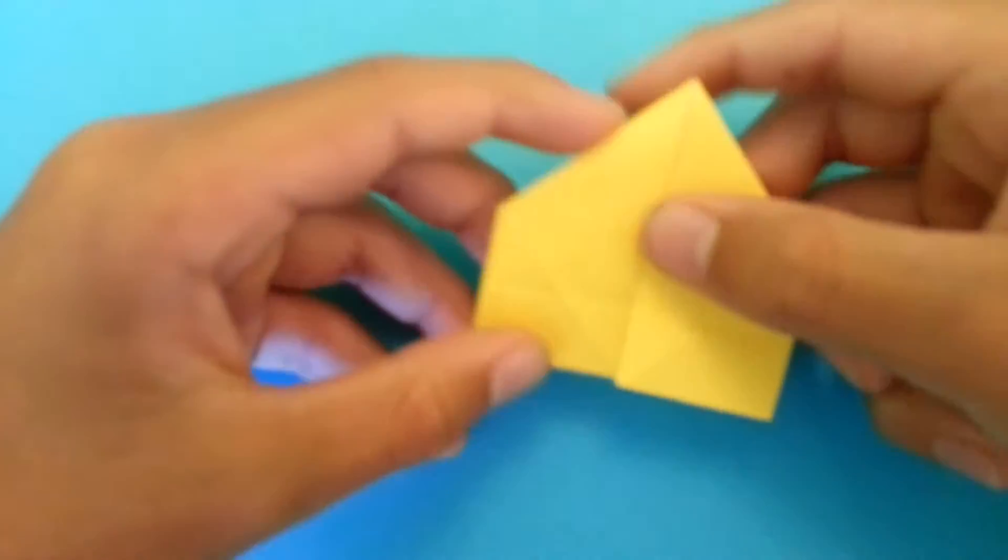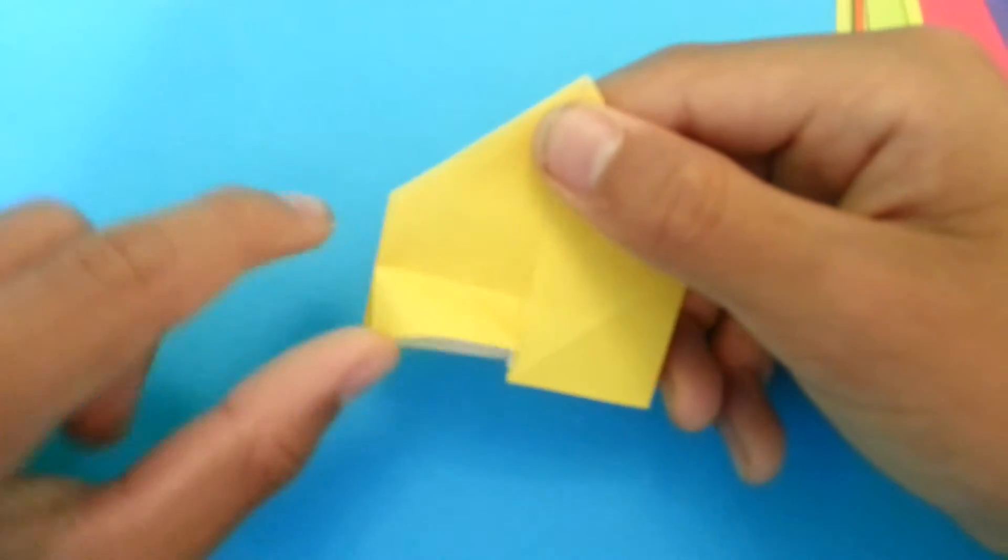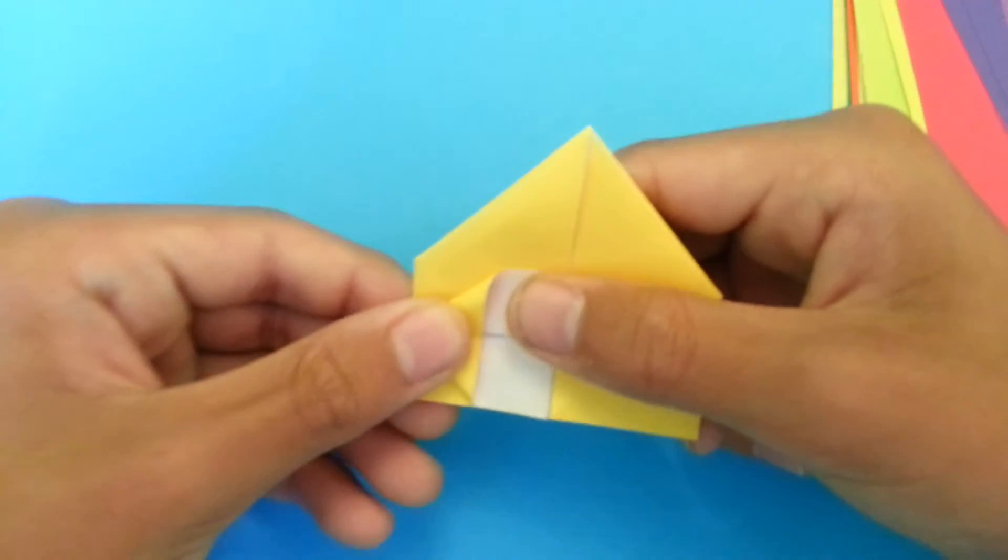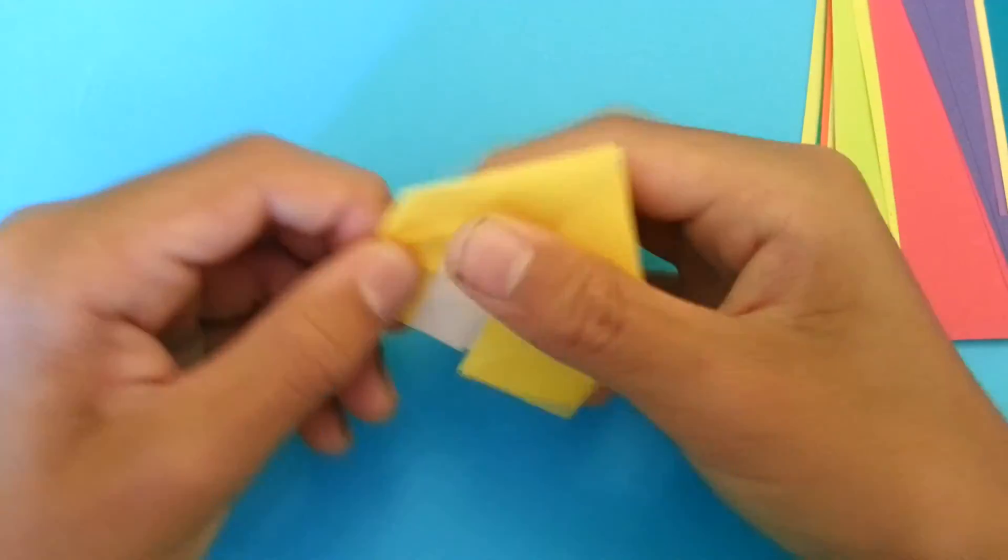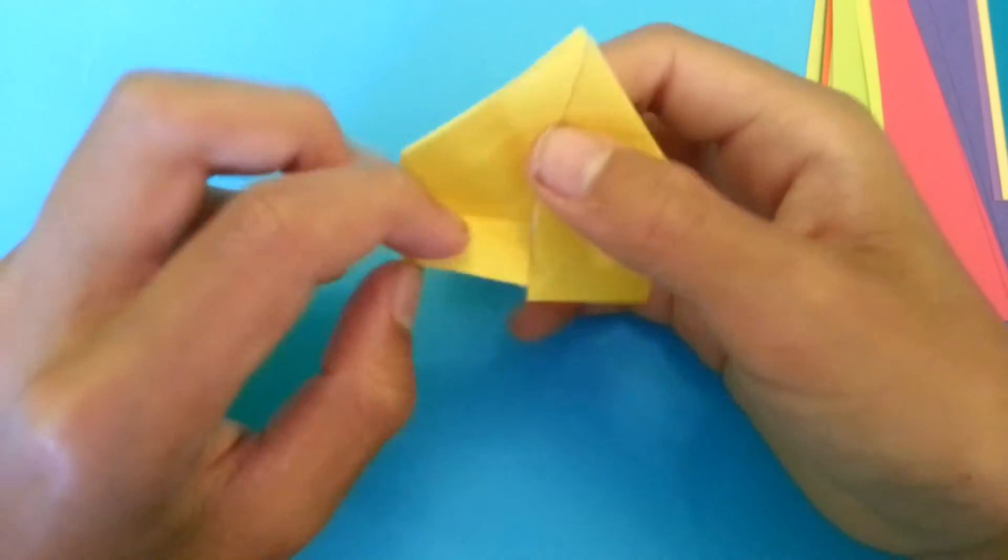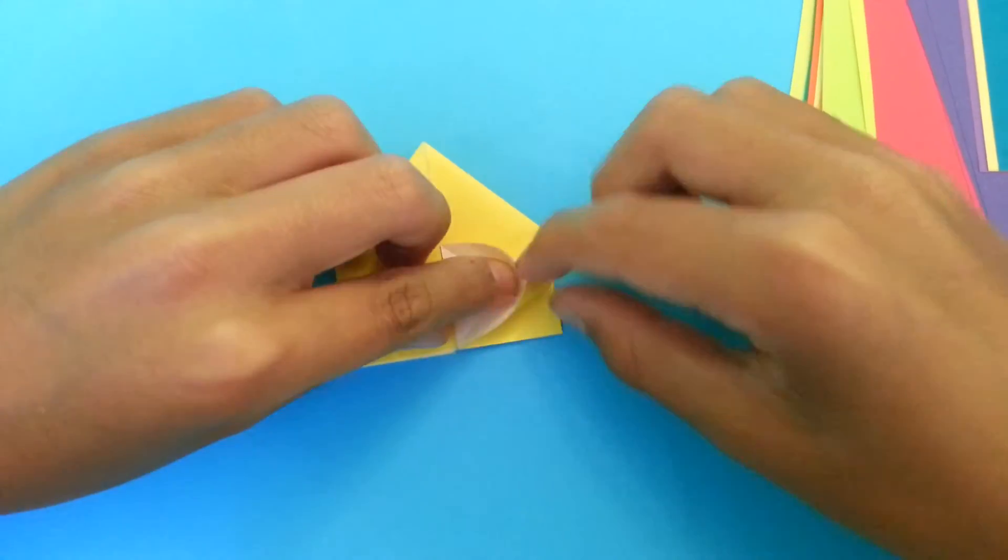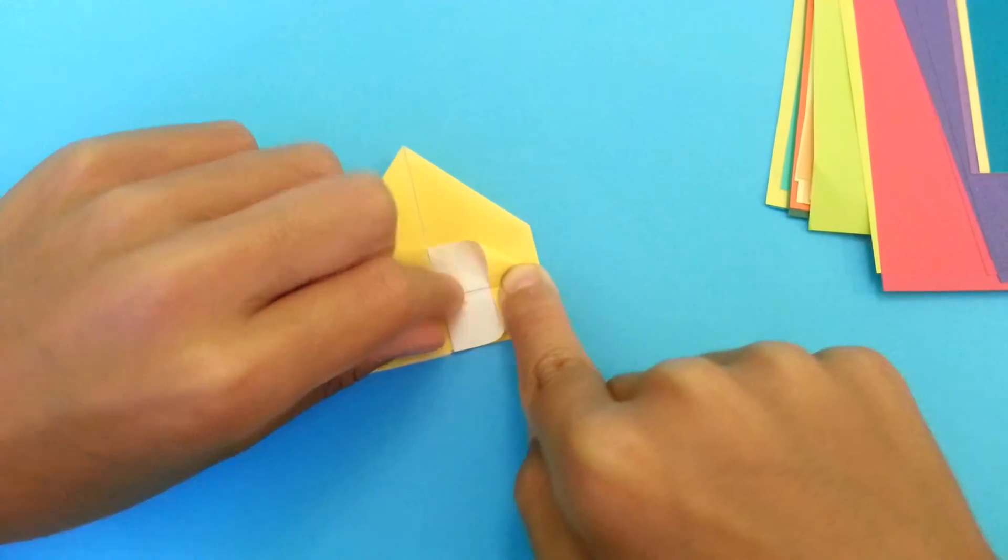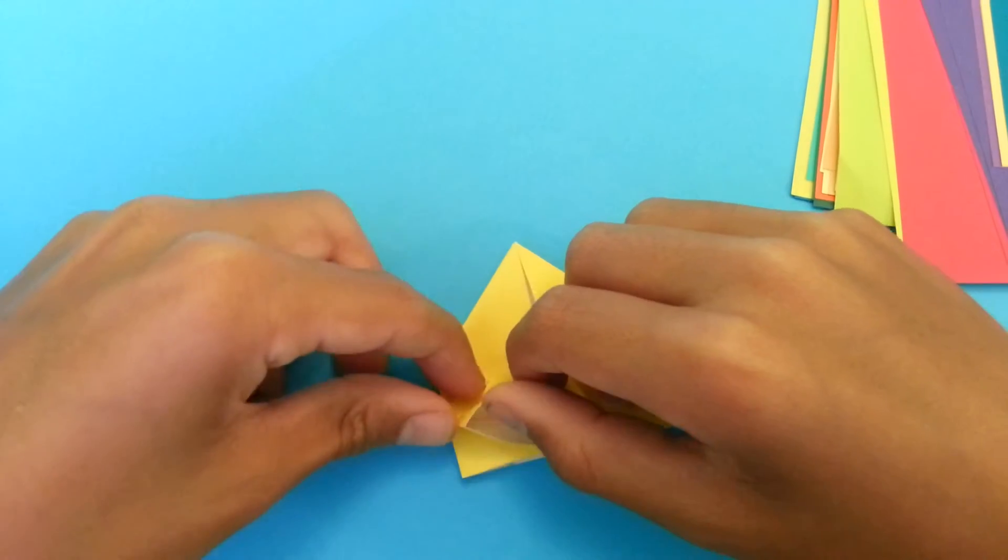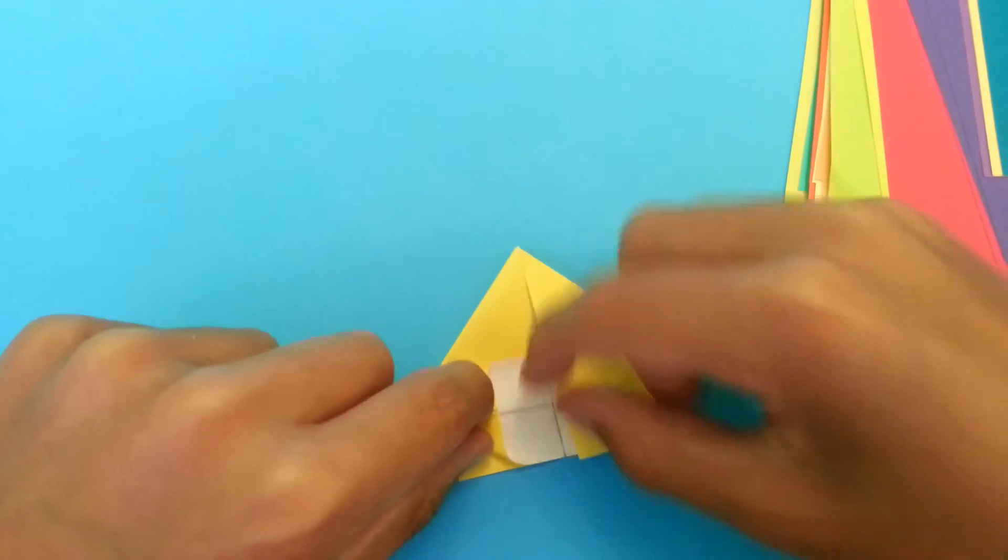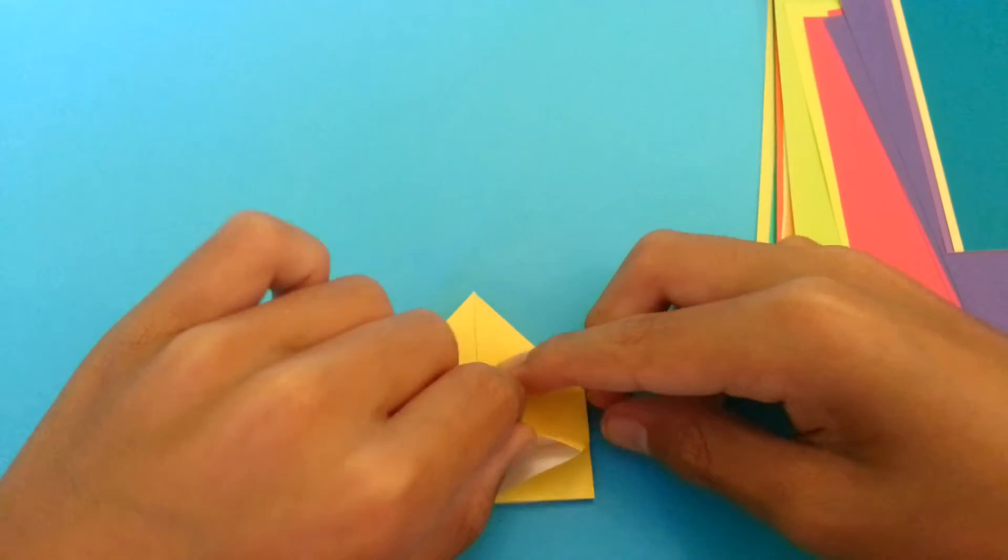Now what you're going to do is fold this flap up on this crease, and at the same time you're going to make a squash fold like this. Now unfold. Repeat on the other three flaps.